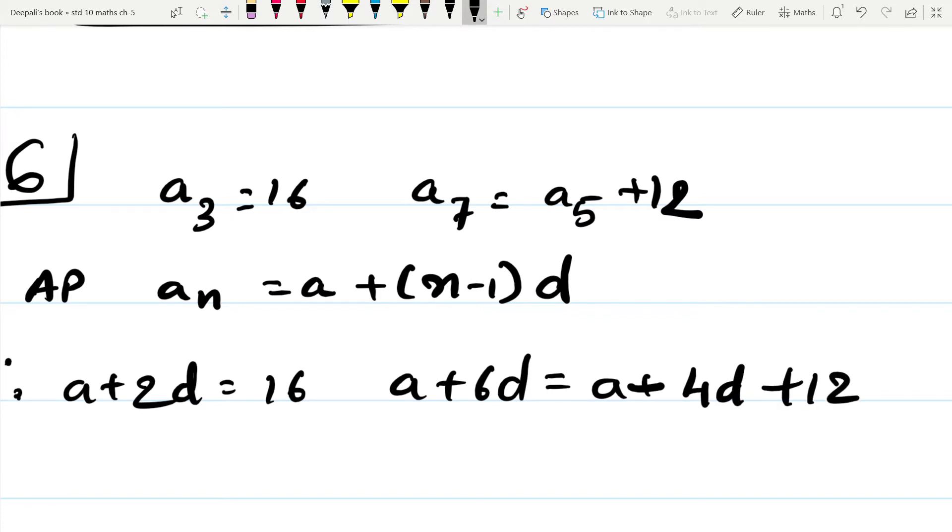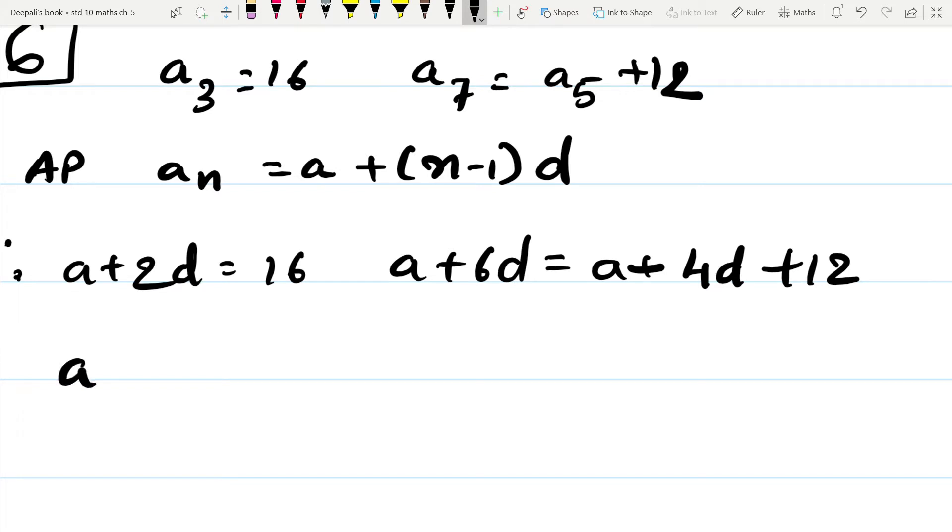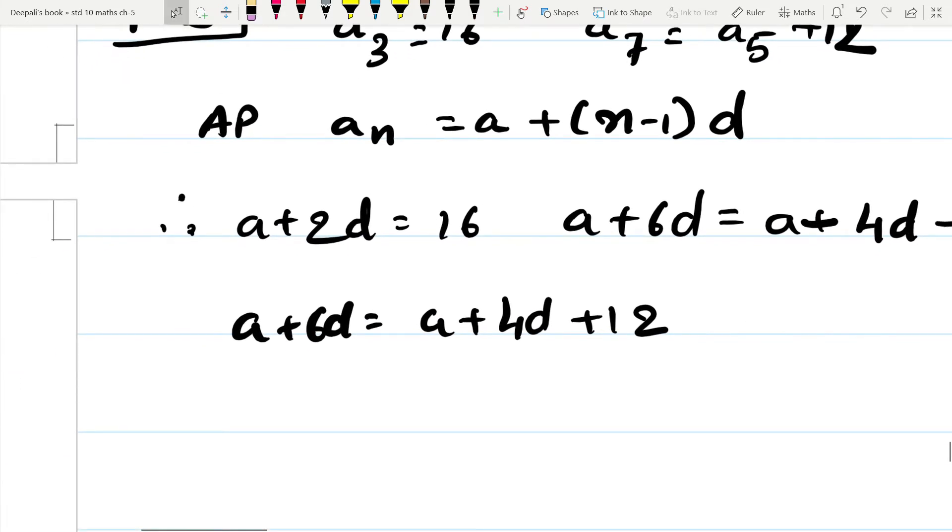So we get A plus 6D is equal to A plus 4D plus 12, and 2D is equal to 12. Therefore D is equal to 6.